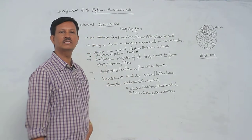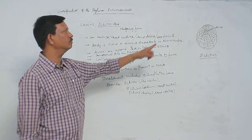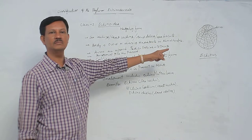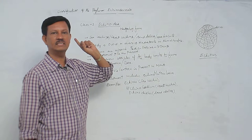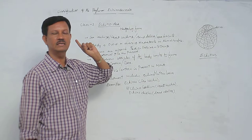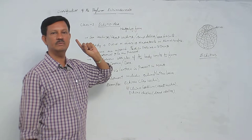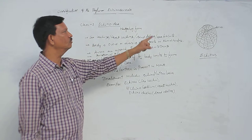The important character of this class is that no arms are present. Arms are completely absent. In previous classes we discussed, arms are present - there are five arms and sometimes arms are biramous. But here, no arms are present.